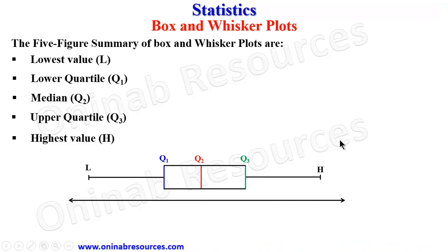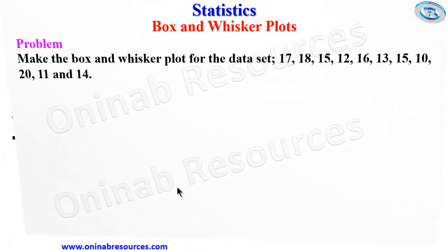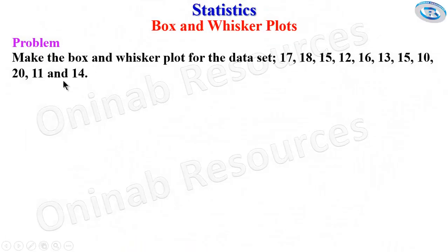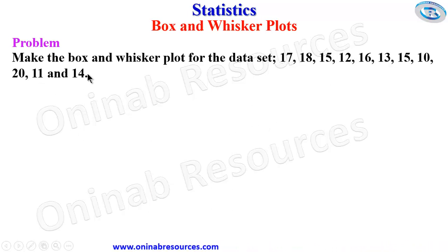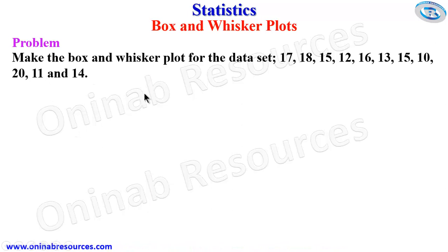So we now look at a problem here. Make the box and whisker plot for the data set: 17, 18, 15, 12, 16, 13, 15, 10, 20, 11, and 14.